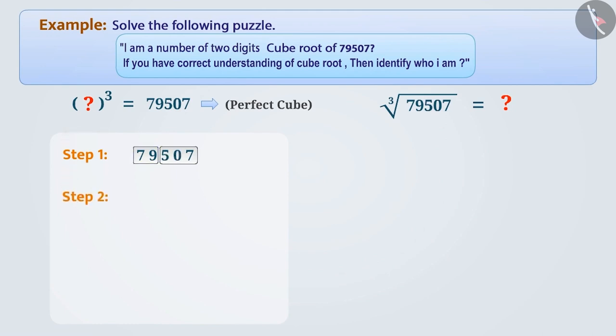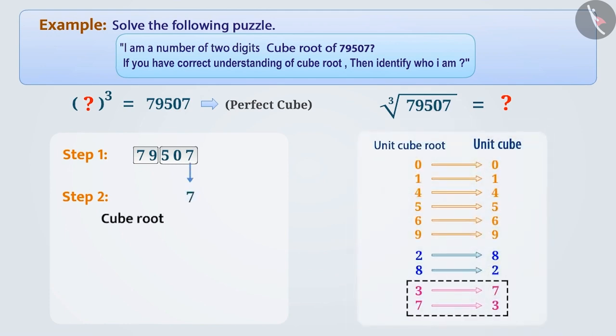Step 2: The last digit of the number given here is 7. From this we know that the unit digit of the cube root would be 3.